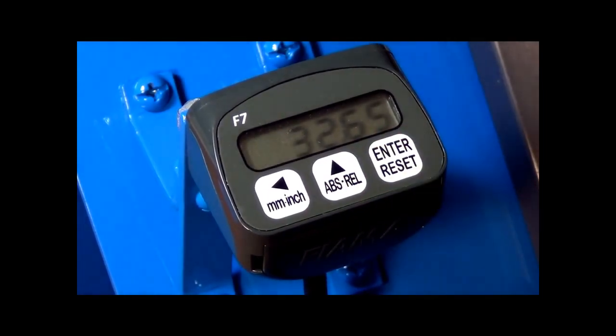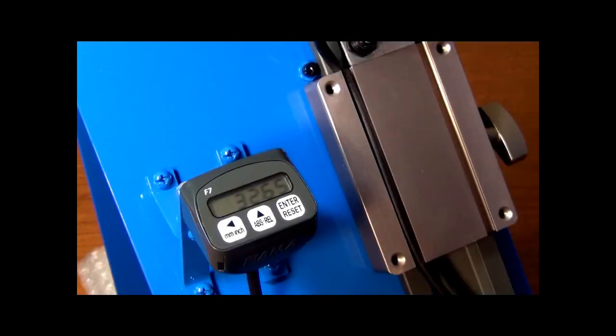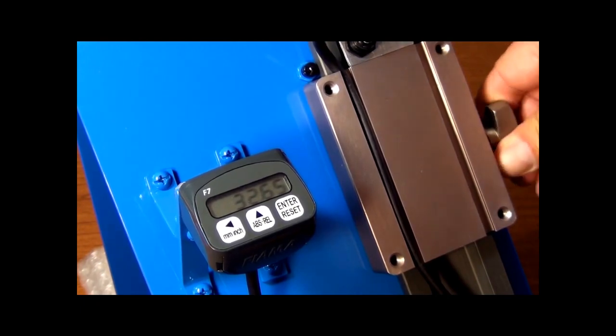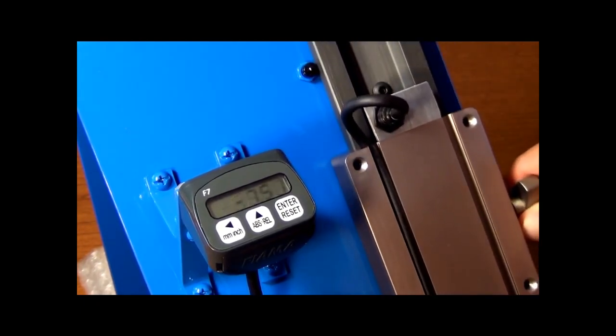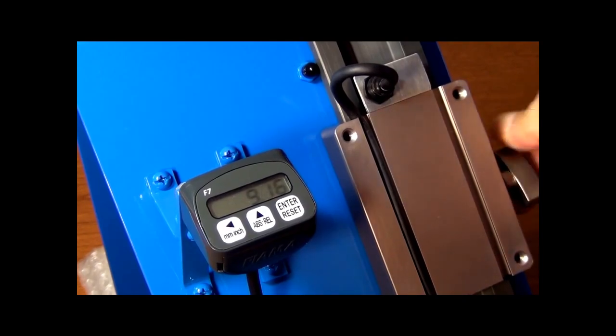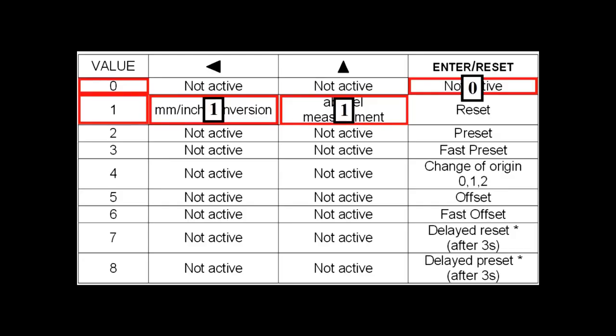To minimize any accidental change of our preset position, we will re-enter the program mode, and disable the RESET functionality by changing the TAST1 code to 1, 1, 0.